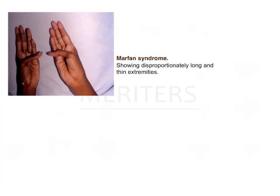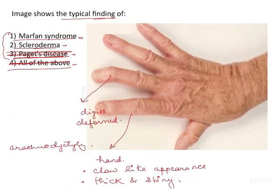On the other hand, Marfan syndrome will have a disfigurement where the digits are long, the thumb is extremely long and can be extended, there is hyper-flexibility of the joints, the fingers are disproportionately long, and the extremities are very thin. So these features are typical of Marfan syndrome, while the given question is typical of scleroderma.